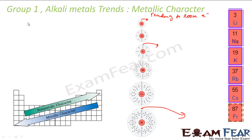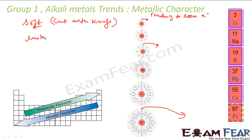All alkali metals are generally soft. They can be cut with a knife — they are very, very soft. They can easily be cut with a knife and they have luster; they shine. If you remember the pictures of lithium, sodium, potassium shown in the first few slides, they have shine, but they easily lose the shine when exposed to air. So they are generally dipped in kerosene.